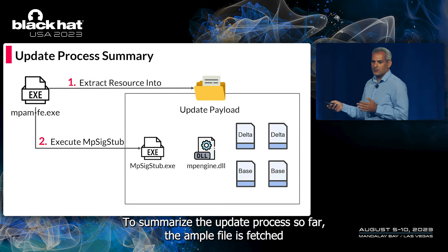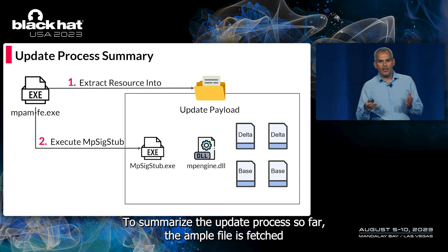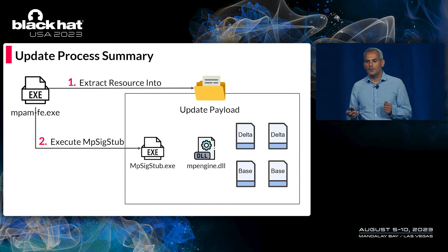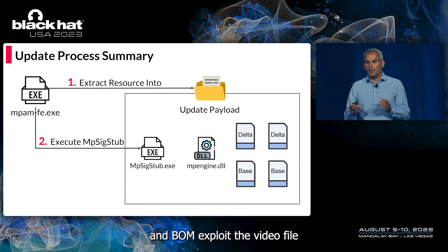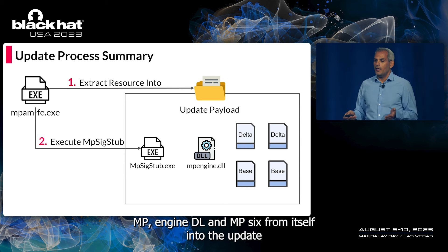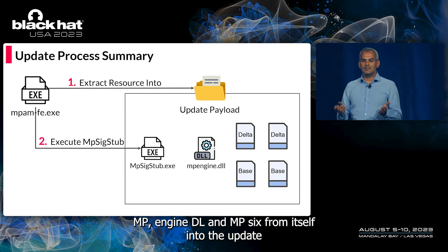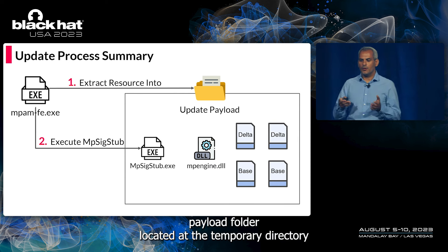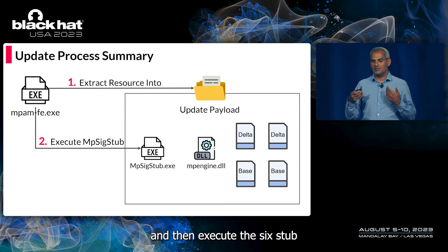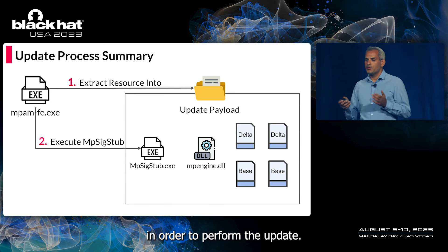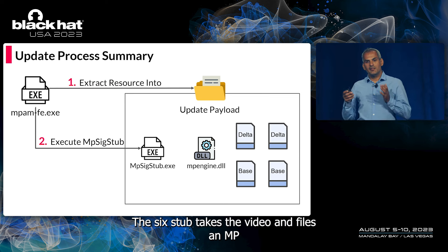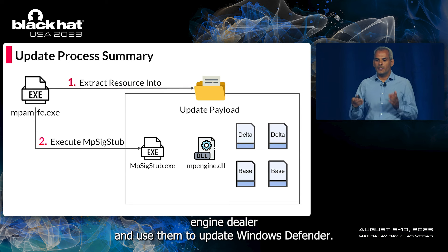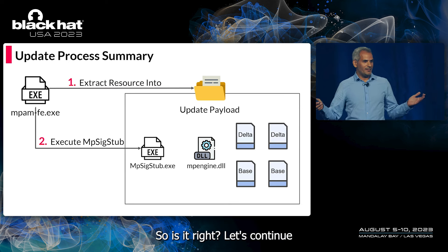To summarize the update process: the MPAM file is fetched from the internet and upon execution triggers an update via three steps. First, MPAM extracts the VDM files, MP Engine DLL, and MP SigStab from itself into an update payload folder in the temp directory. Second, MPAM executes SigStab to perform the update. Third, SigStab takes the VDM files and MP Engine DLL and uses them to update Windows Defender.